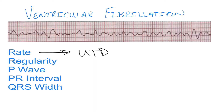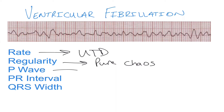That speaks to the regularity with ventricular fibrillation — you're going to see pure chaos. So many different parts of the heart are firing that there's zero regularity and zero rhythm. There are no P waves, no PR interval, and no QRS complex.